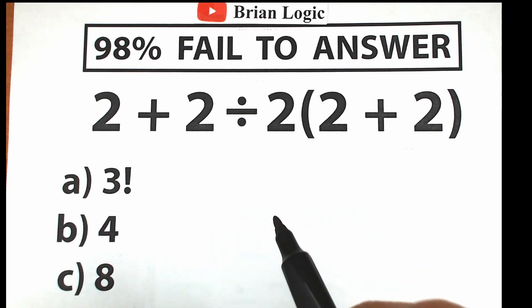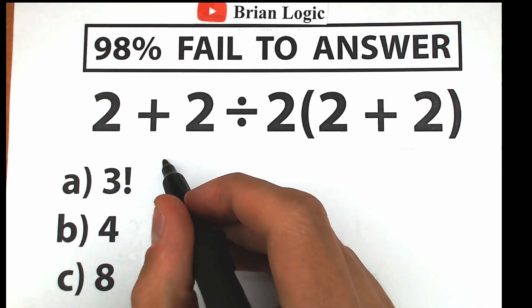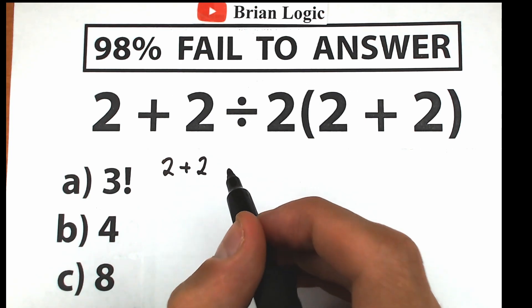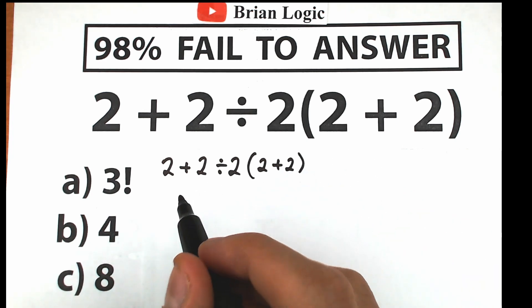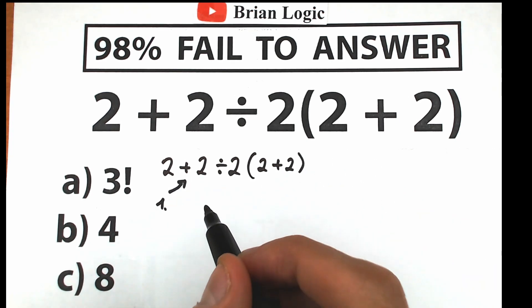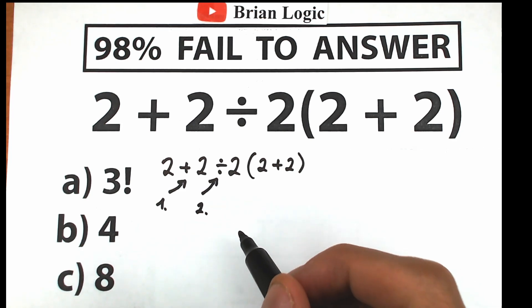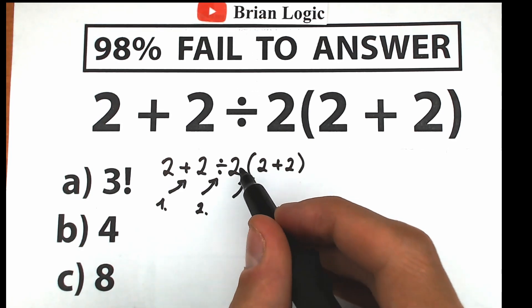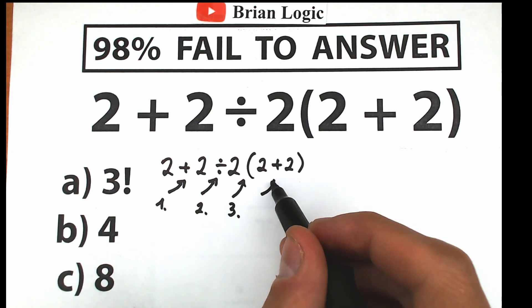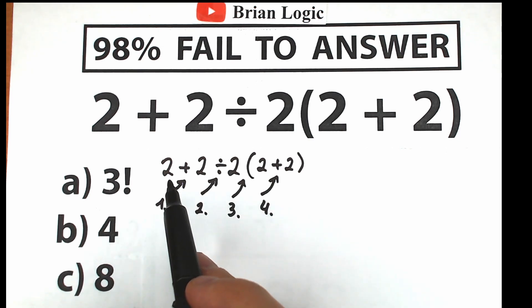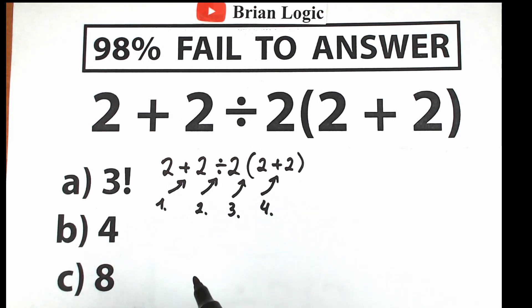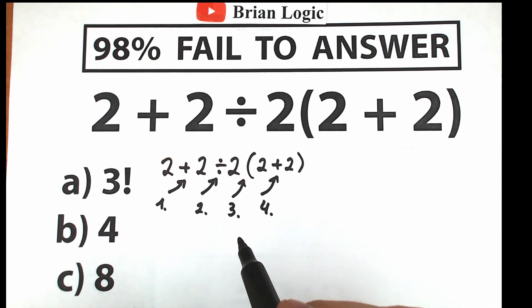We'll check your answers in just one minute. Let me rewrite this challenge: we have 2 plus 2, division by 2, and 2 plus 2 inside parentheses. We have addition as the first operation, division as the second, multiplication before the parentheses as the third, and one addition inside — so four operations total. The main question: do we divide first, add first, or multiply first? Obviously, whatever order we select will create different results.